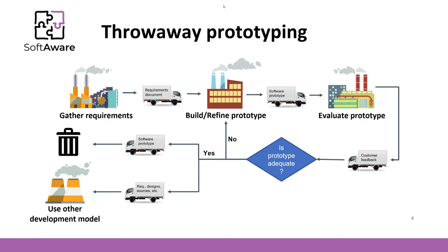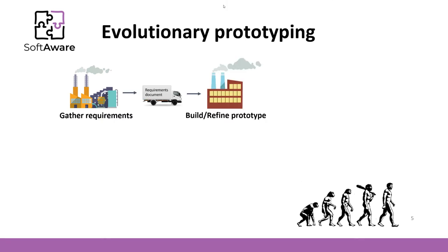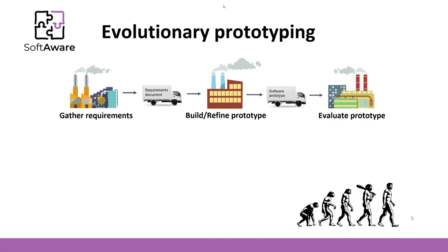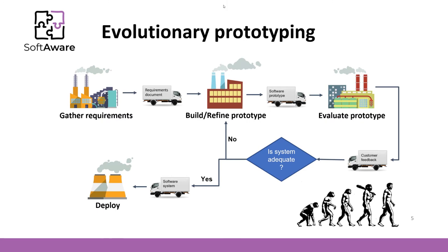It is possible to keep the prototype and improve it so that eventually the prototype becomes the actual working software. This is the second major method: evolutionary prototyping. Evolutionary prototyping is very similar to throw-away prototyping. The development team gathers the initial requirements and builds the software prototype. The prototype is provided to the customer for evaluation. The customer gives feedback and the development team refines the prototype. In this model, the software system as such is evaluated, therefore quality methods should be applied to verify and validate the software, in contrast to throw-away prototyping. When the system becomes adequate, it is deployed.